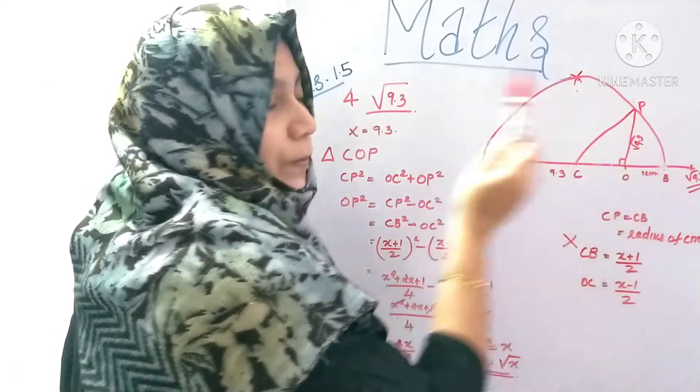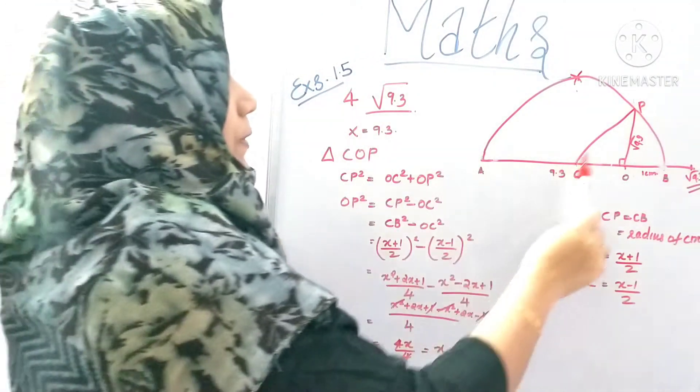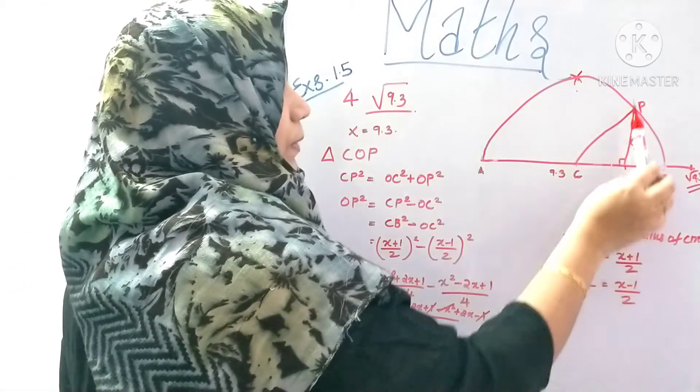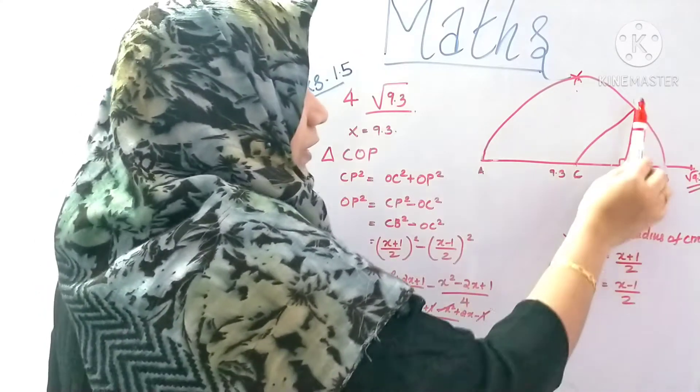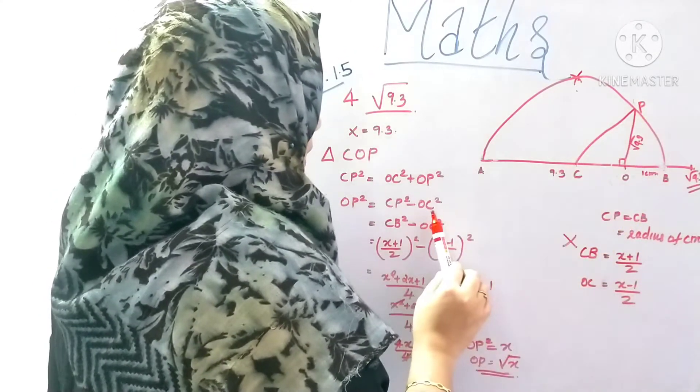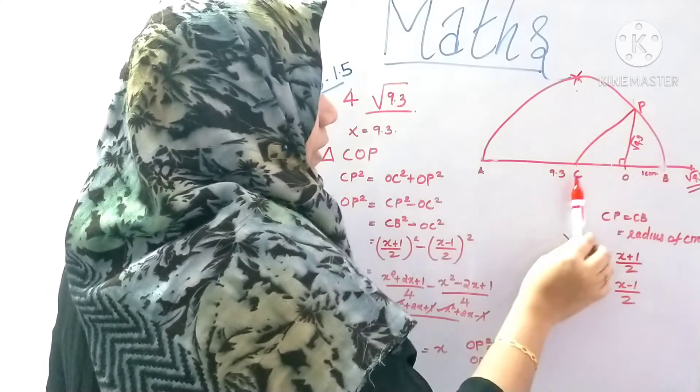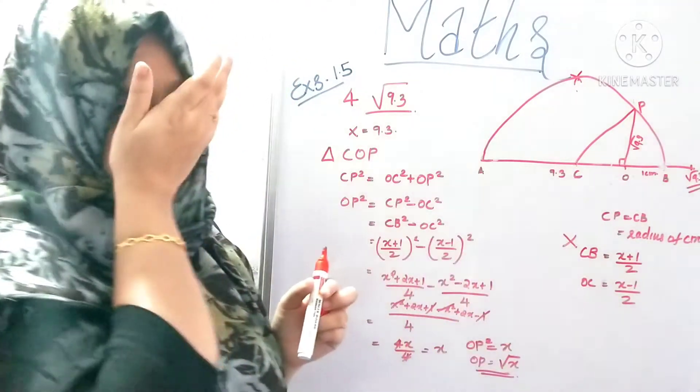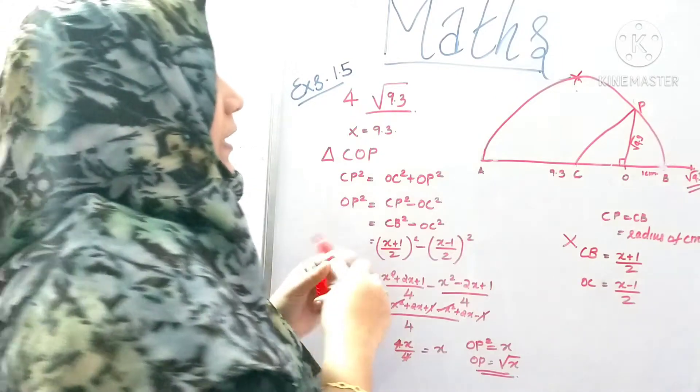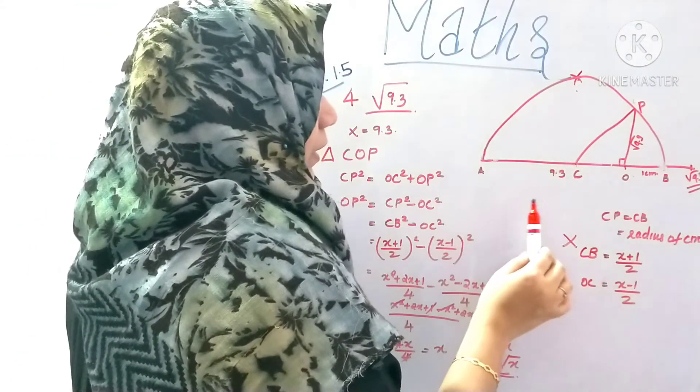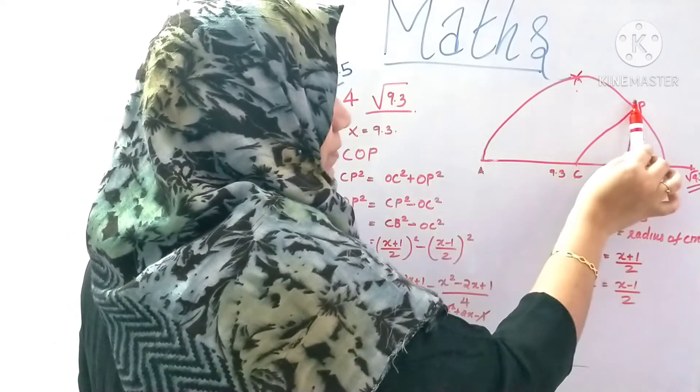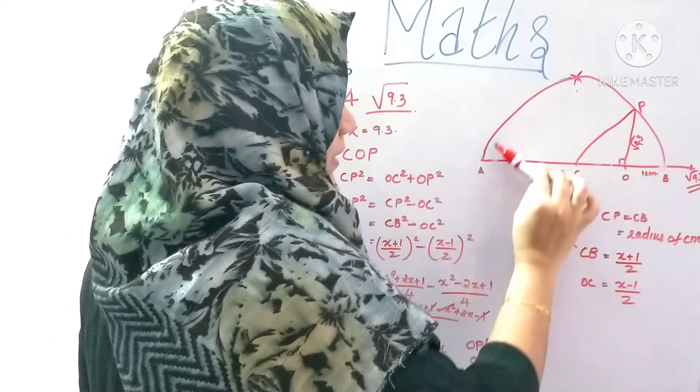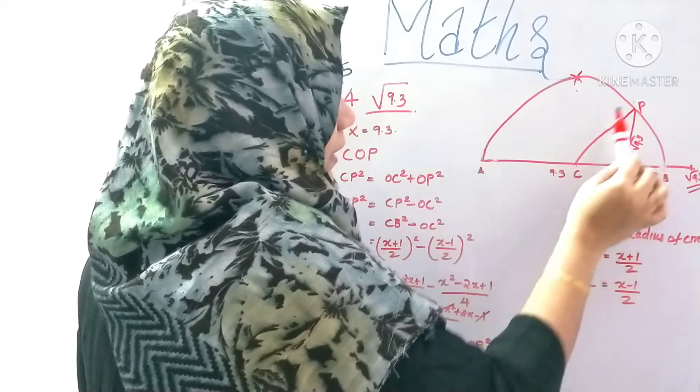Now this is hypotenuse square. CP square equals OC square plus OP square. So here we put it as CP square. So OP square means CP square minus OC square. Then we put it as CP square.